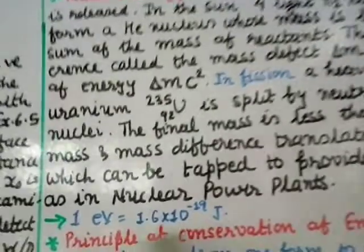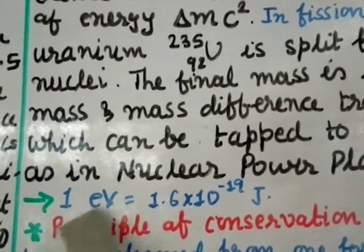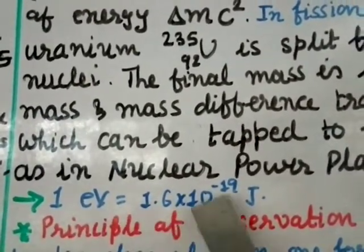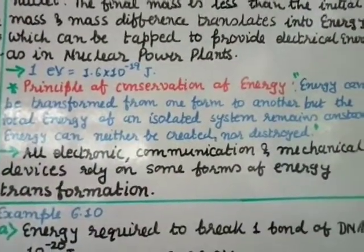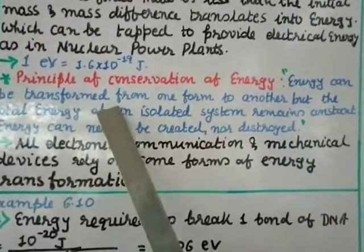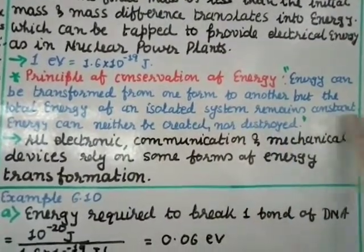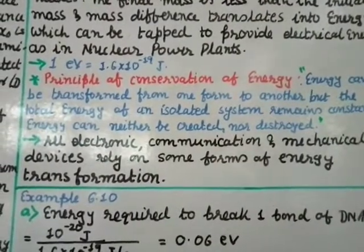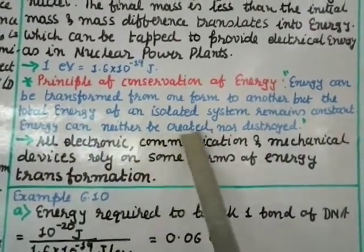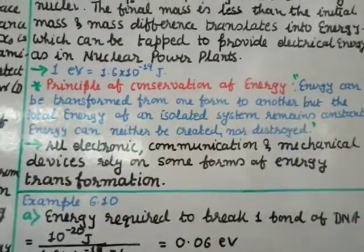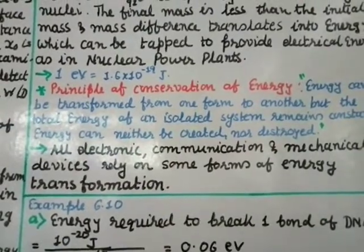The relation between electron volt and joule: 1 eV = 1.6 × 10⁻¹⁹ Joules. Principle of Conservation of Energy: Energy can be transformed from one form to another, but the total energy of an isolated system remains constant. Energy can neither be created nor destroyed, but it can be converted from one form to another.